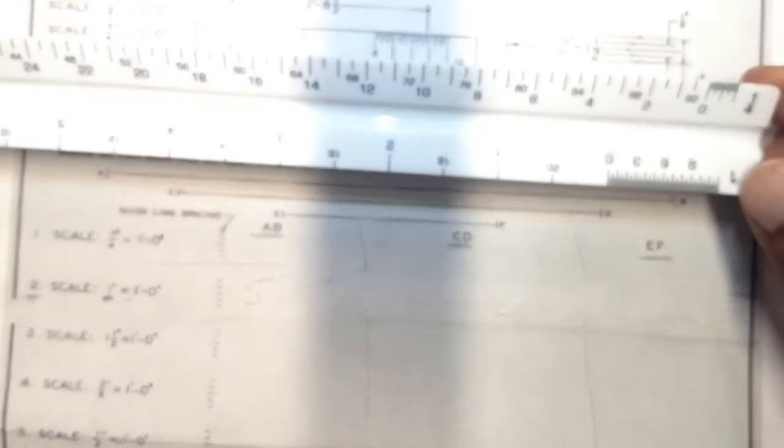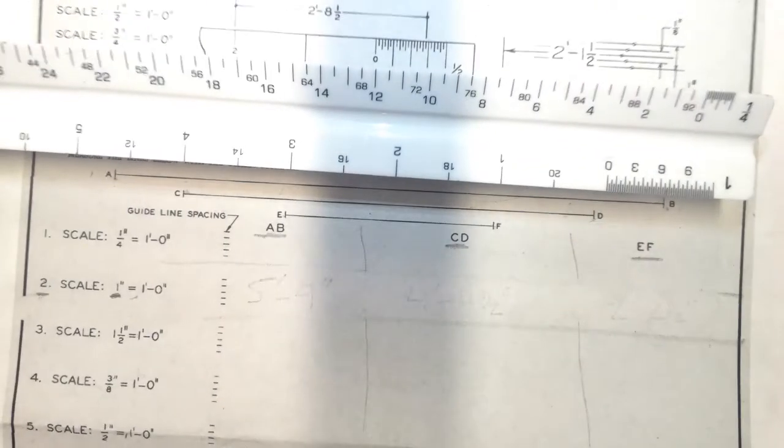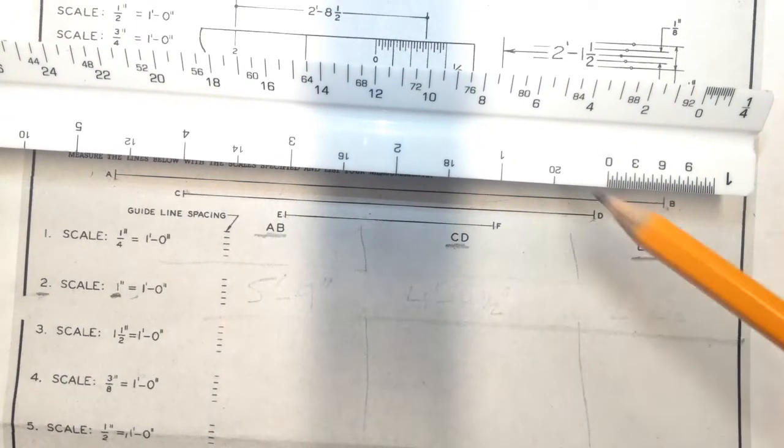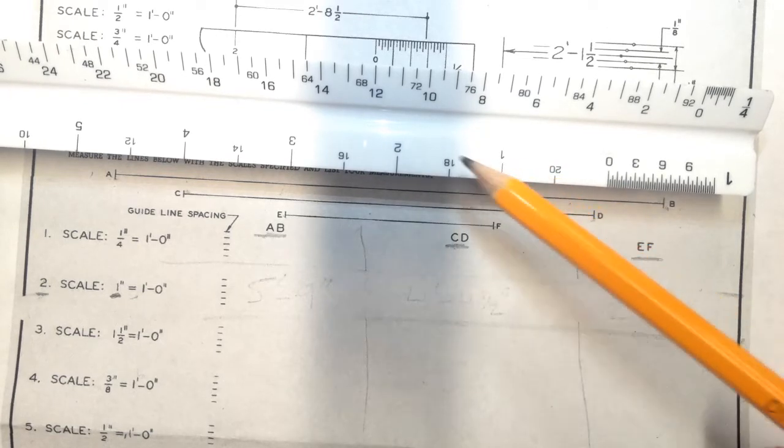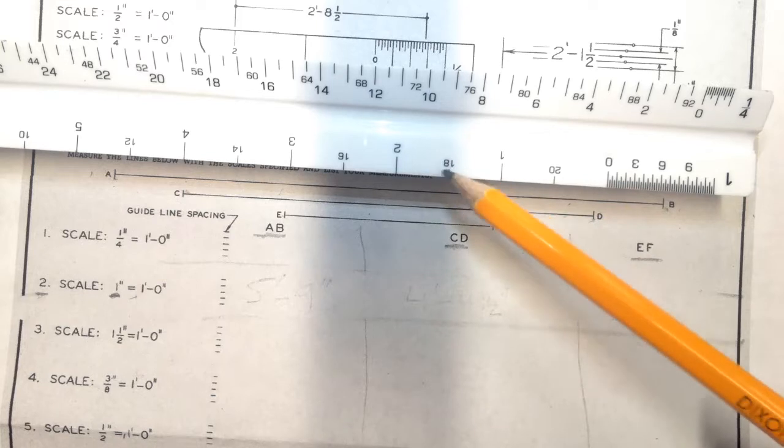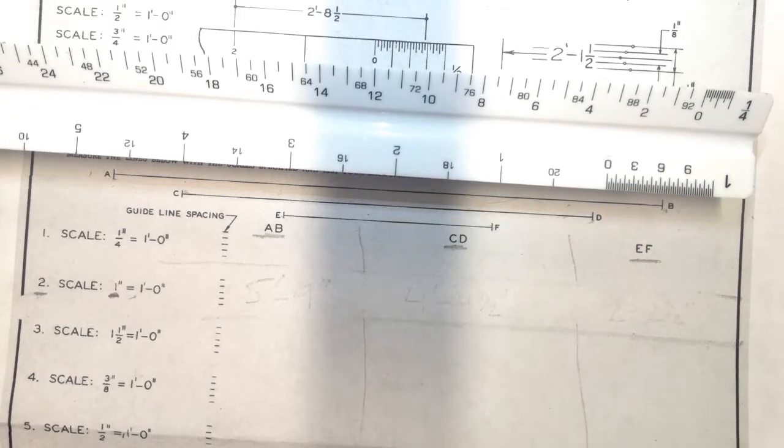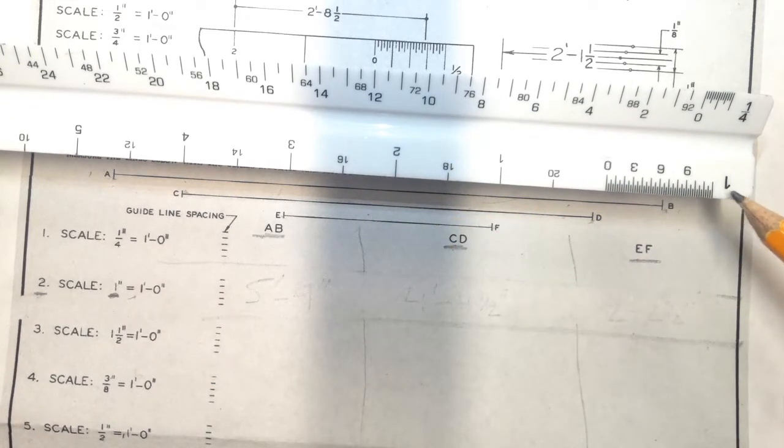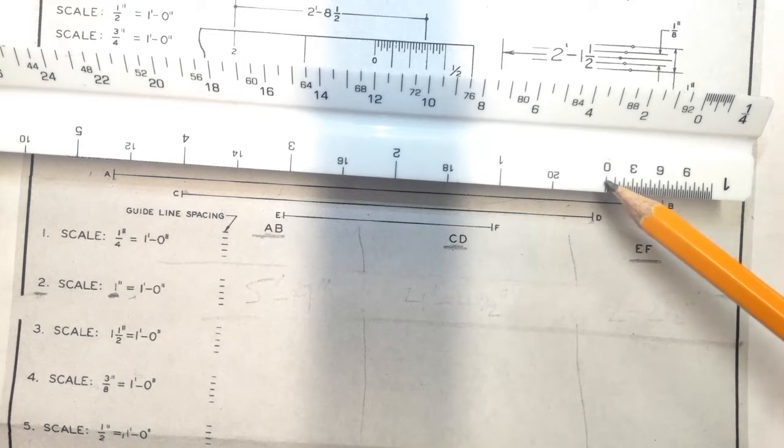So the first step is identifying that. The second step is to identify where the zero is. So the zero is right there. And zero being on the bottom is going to correlate to all of the other measurements that are on the bottom. So 1 feet, 2 feet, 3 feet, and so on and so forth. We're not going to worry about these 20, 18, 16. That's for another scale.